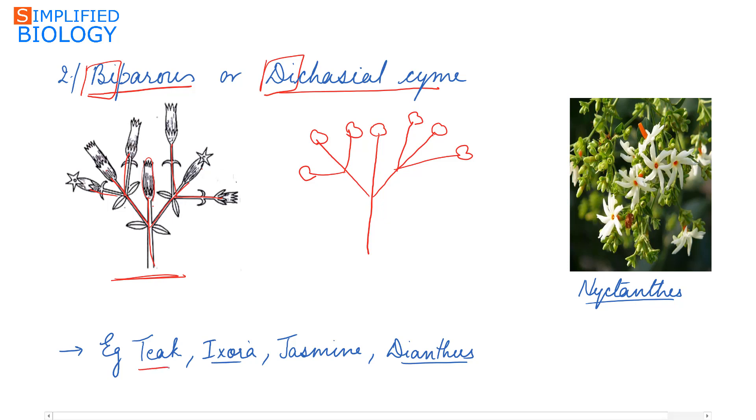Examples of biparous or dichasial cyme are Teak, Ixora, Jasmine, Dianthus, and Nyctanthus.